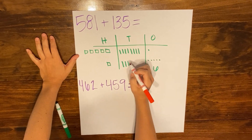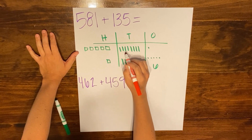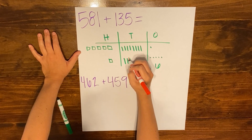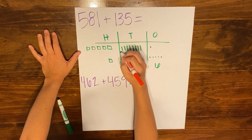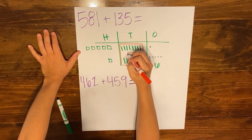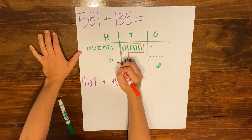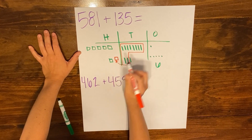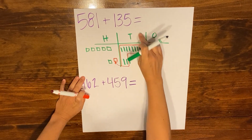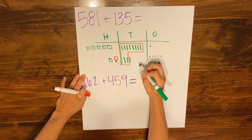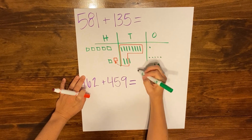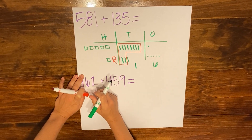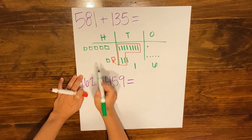To regroup, I'm going to take 10 of my tens and regroup them into 100. I'll count out ten: 1, 2, 3, 4, 5, 6, 7, 8, 9, 10 — and regroup this into one hundred. Now when I look at my tens column, I only have one ten left over.